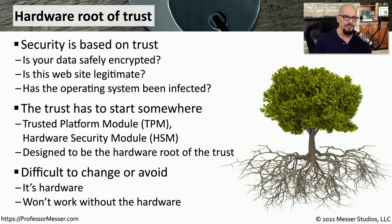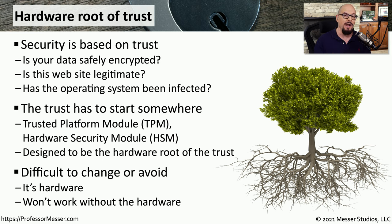One significant security advantage of this hardware root of trust is that it's hardware — it's not something you can easily change by running malicious software or changing an application configuration. You have to physically change it if you want to modify what's on the hardware. This also means the hardware has to be installed for the trust to be put into the system, so there should be a trusted platform module on your computer providing that hardware root of trust.